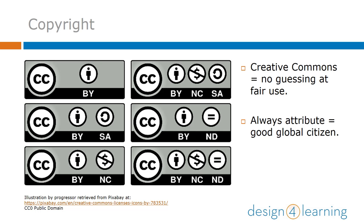As librarians, we hear a lot about fair use, but that concept gets pretty murky when you go beyond text-based paper materials. Instead of guessing whether the image you found qualifies as fair use, we recommend looking in places that have easy-to-determine rights management right out of the gate. Creative Commons uses pictured licenses to let creators choose whether material is public domain right up to all rights reserved. There are a lot of image collections that use Creative Commons licensing or provide other easy-to-determine rights and usage options, so give yourself a break and go straight for the images you know you can use.